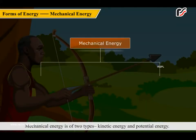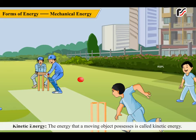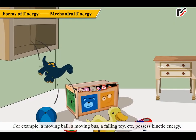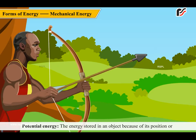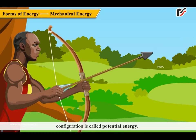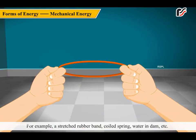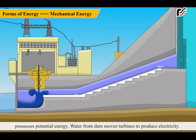Mechanical energy is of two types: kinetic energy and potential energy. Kinetic energy is the energy that a moving object possesses. For example, a moving ball, a moving bus, a falling toy, etc. possess kinetic energy. Potential energy is the energy stored in an object because of its position or configuration. For example, a stretched rubber band, a spring, water in a dam, etc. possess potential energy. Water from a dam moves turbines to produce electricity.